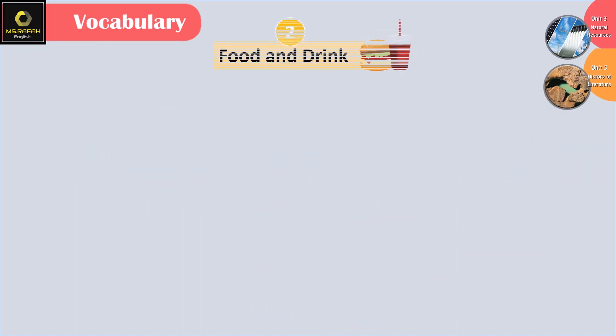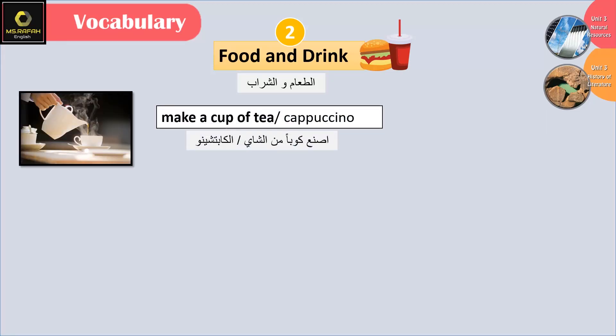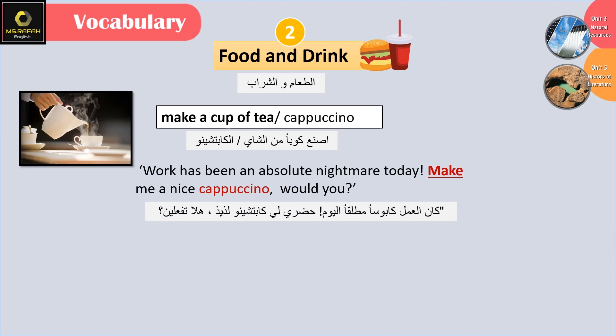Number two: food and drink. We say 'make a cup of tea' or 'make a cappuccino' — anything related to food and drink, we use 'make'. For example: 'Work has been an absolute nightmare today, make me a nice cappuccino, would you?' With food and drink, we use 'make'.